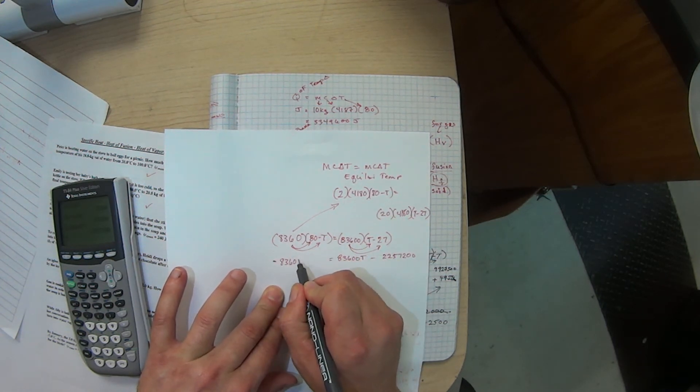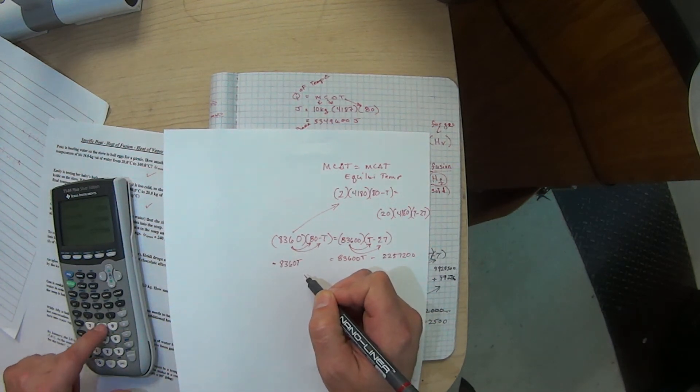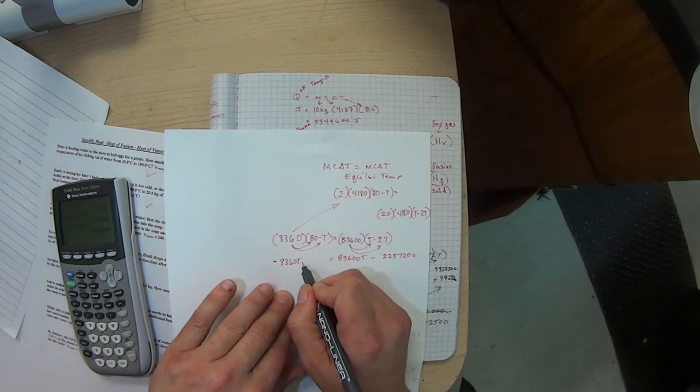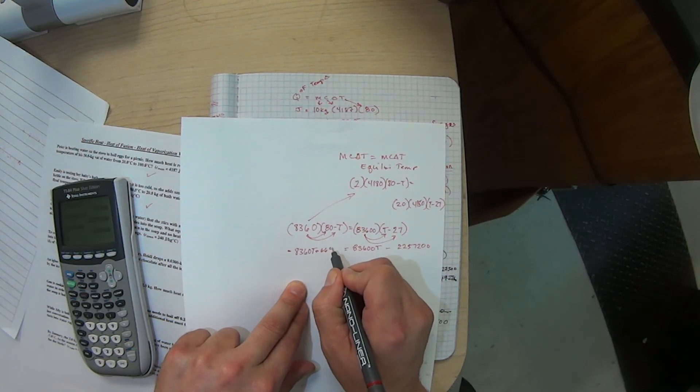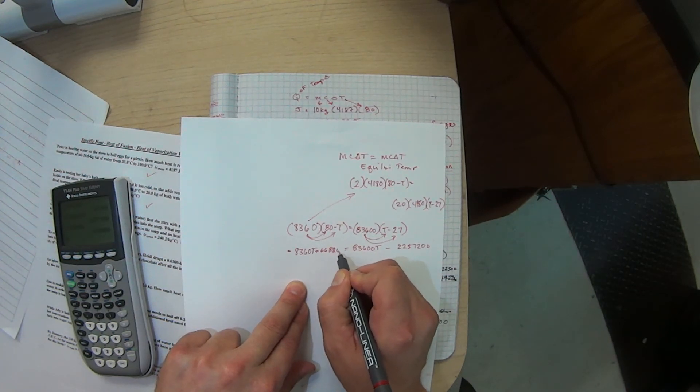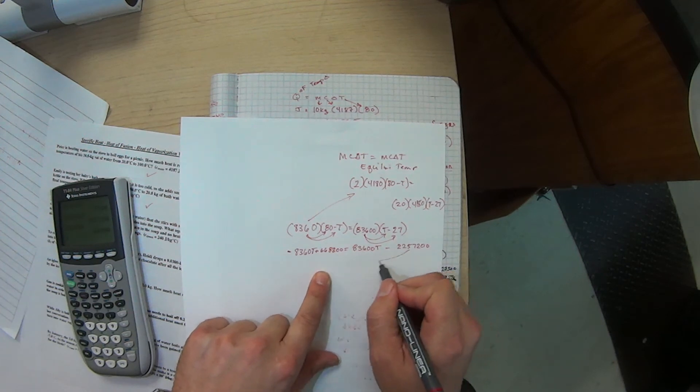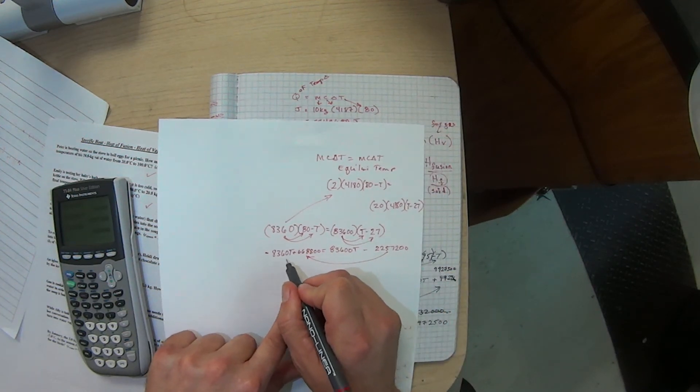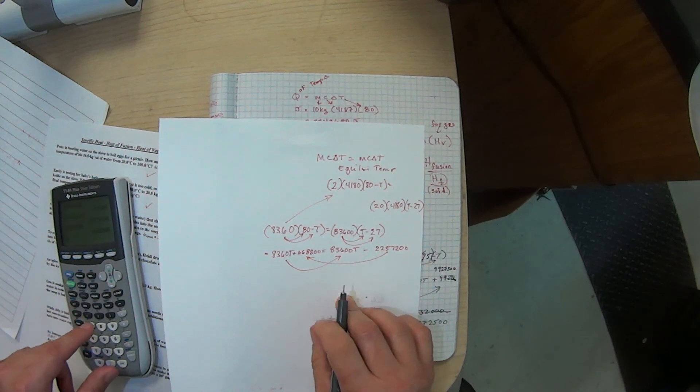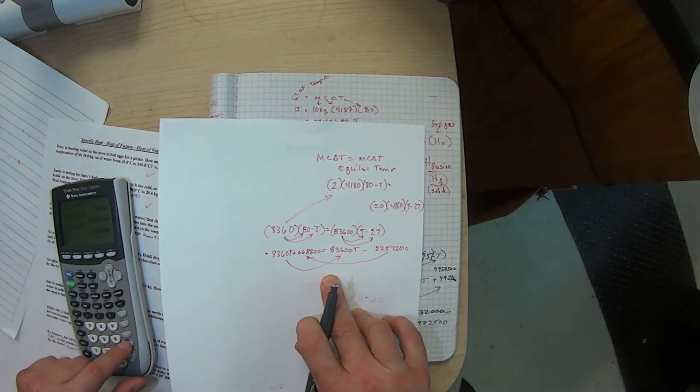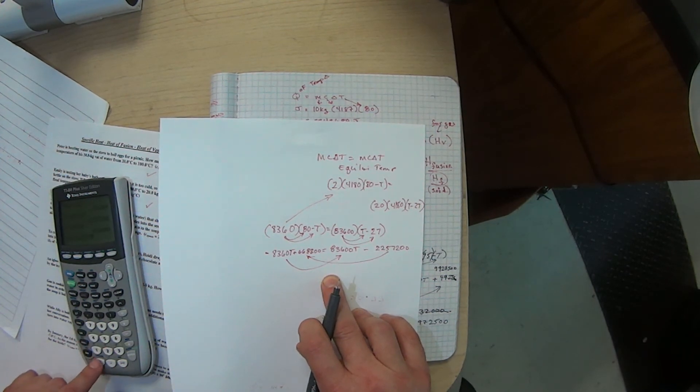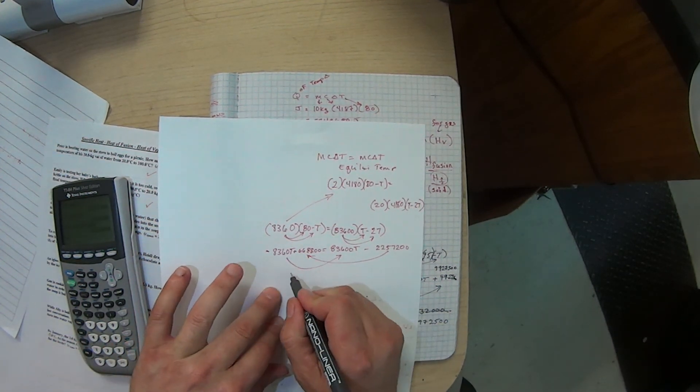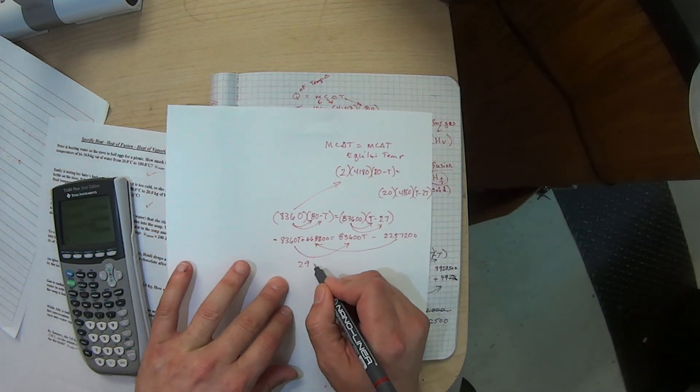It's going to be a negative T because it goes to that, and then we're going to take 8360 times 80. Now I combine terms, I bring this over here, I bring that over there, and I have that number plus wind up with this massive number here equal to...